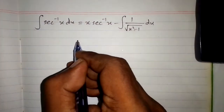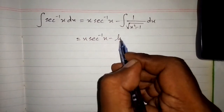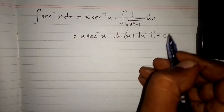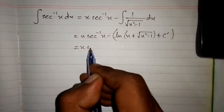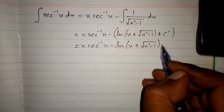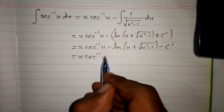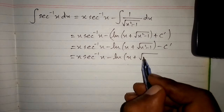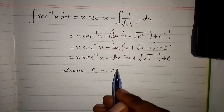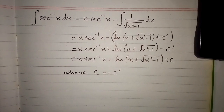Now we put this result back into the integration by parts expression. We have x times sec inverse x minus ln of x plus square root of x squared minus 1 plus c dash. After simplifying, this becomes x times sec inverse x minus ln of x plus square root of x squared minus 1 plus c, where c is the constant of integration. So this is the integral of sec inverse x.